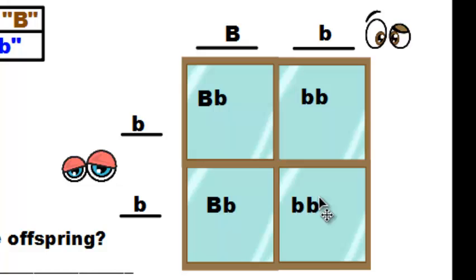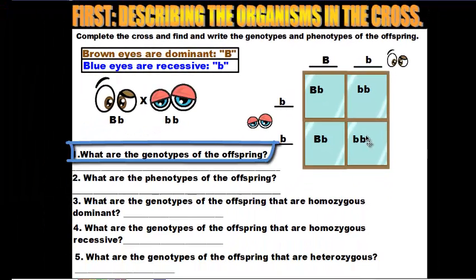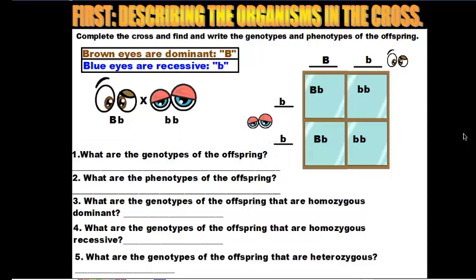Once we have our Punnett square filled out, we can start answering questions based on it. The first question is: what are the genotypes of the offspring — that is, what genes do the offspring inherit? Looking at our Punnett square, we notice there are only two types of genotypes in this cross: big B, little b and little b, little b. Those are the genotypes of the offspring.